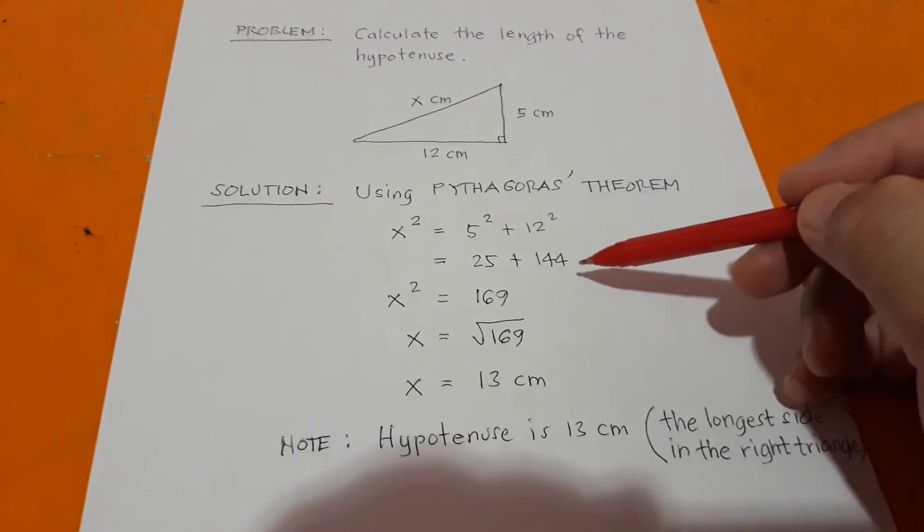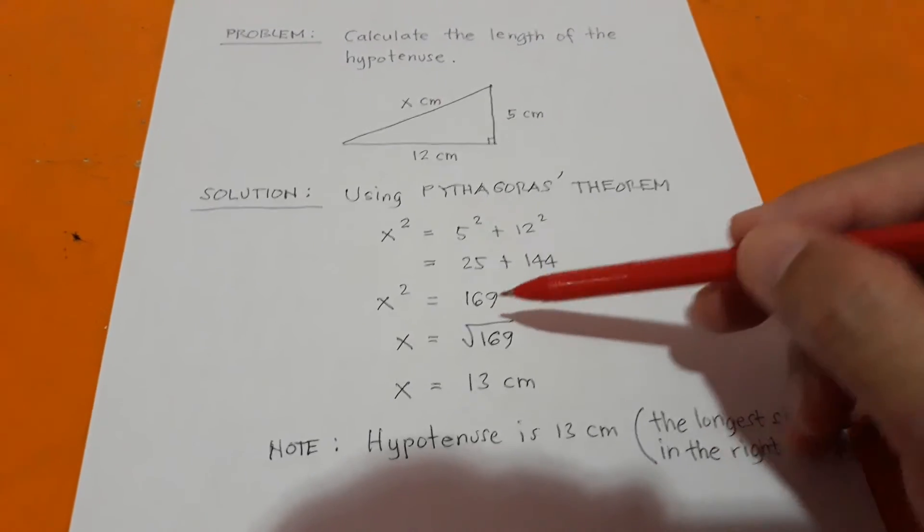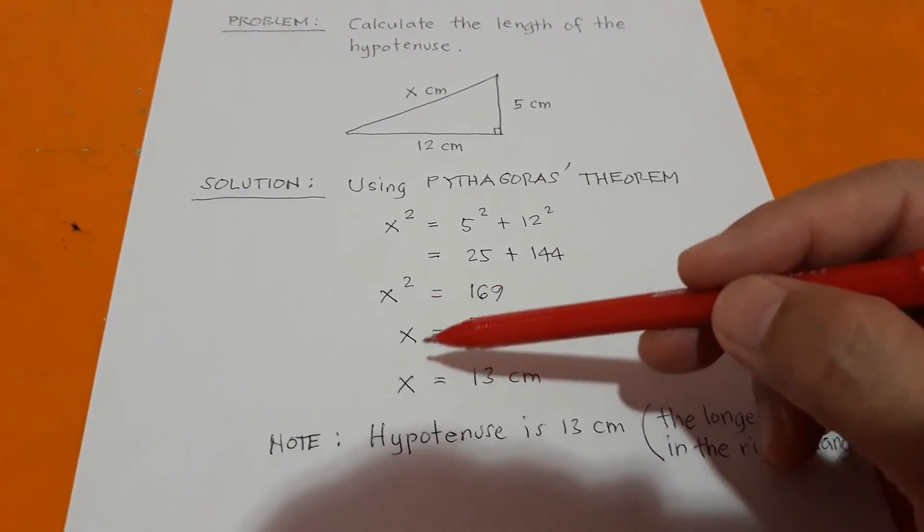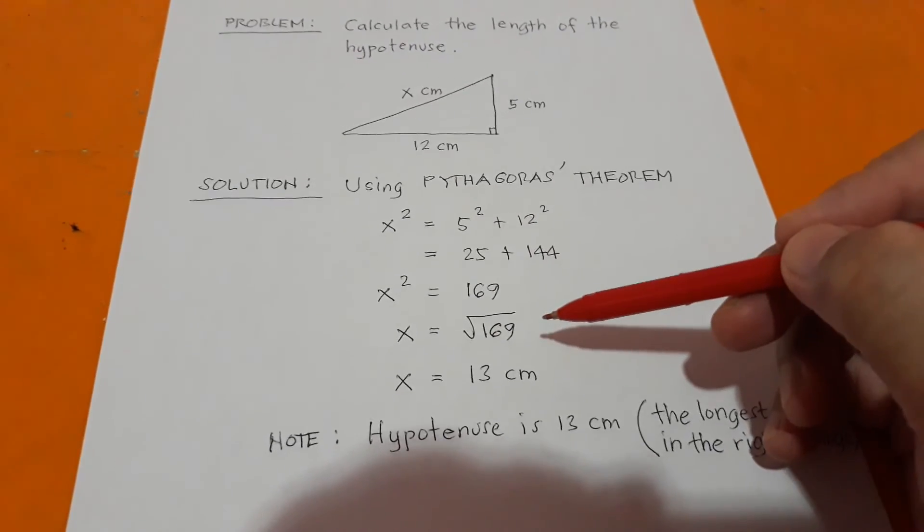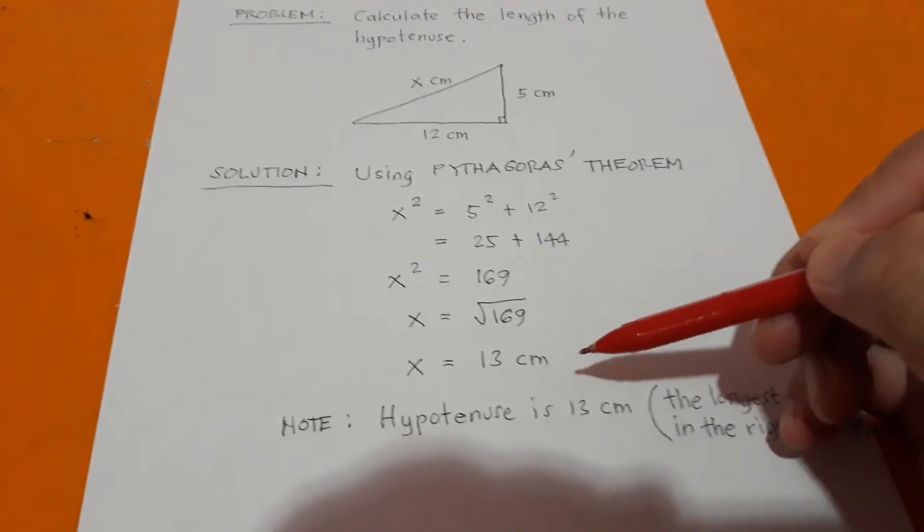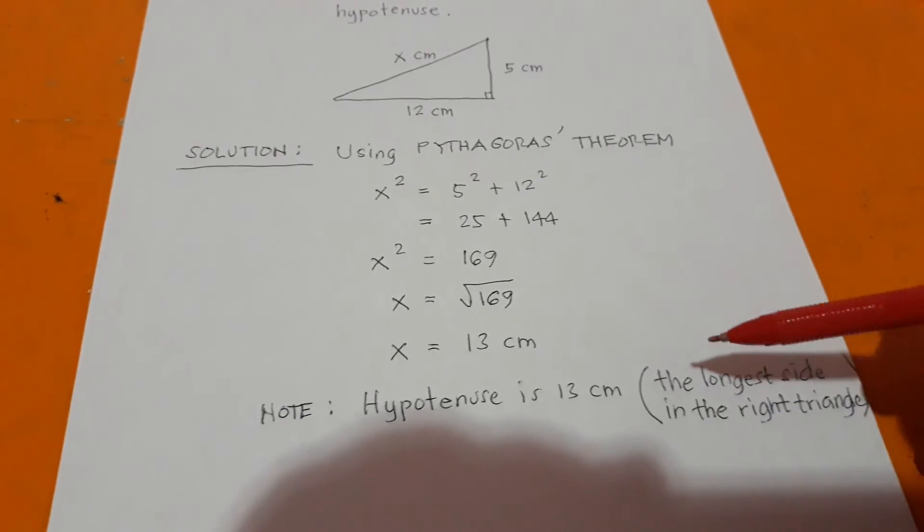Therefore, the total will be 169. That is x squared. So solving for x, we have to take the square root of 169, which is exactly 13 centimeters in this case.